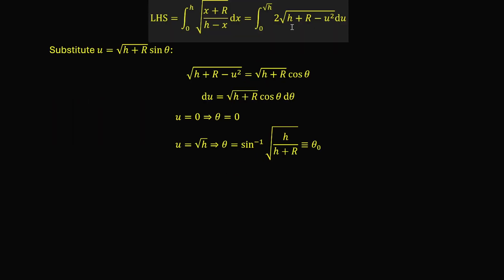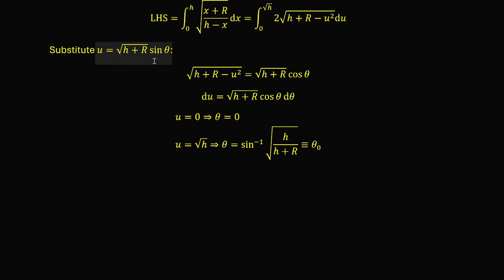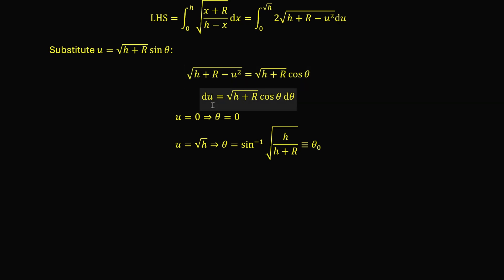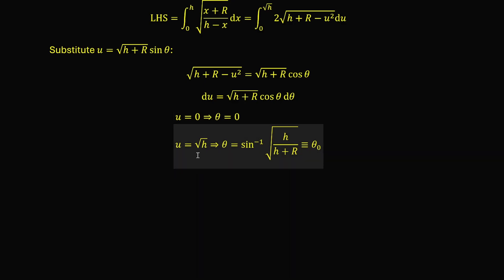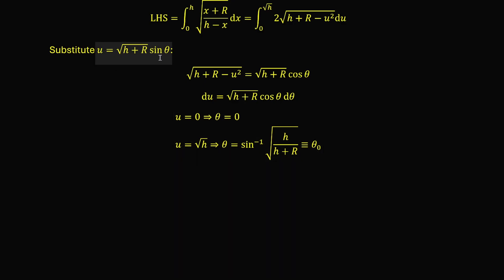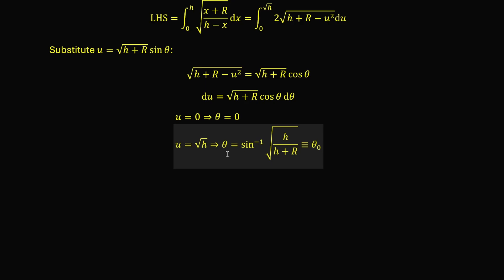Based on the form — the square root of (h + r) minus u² — we substitute u = √(h + r) times sin θ. This brings the square root of (h + r − u²) to √(h + r) times cos θ. Taking differentials gives du = √(h + r) cos θ dθ. For the new integration limits: when u = 0, θ = 0; when u = √h, sin θ = √(h/(h + r)), giving the upper limit θ₀ = arcsin(√(h/(h + r))).